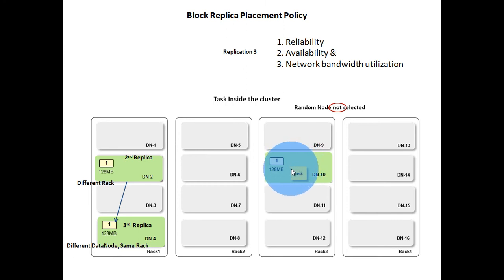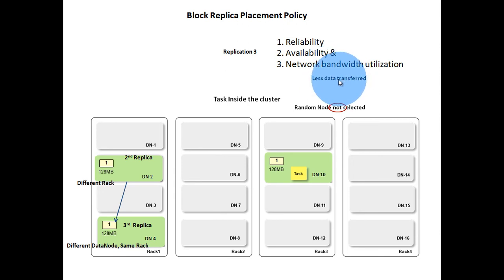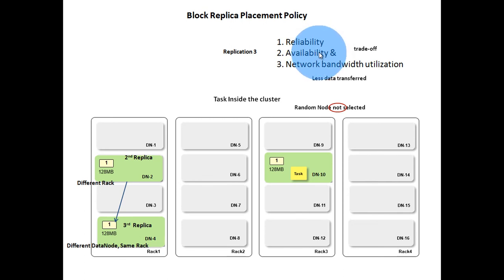Even in this scenario, data is highly reliable and available. But less data is transferred across the network, which will certainly improve write performance. In general, there is always a trade-off between reliability or availability and network bandwidth utilization.